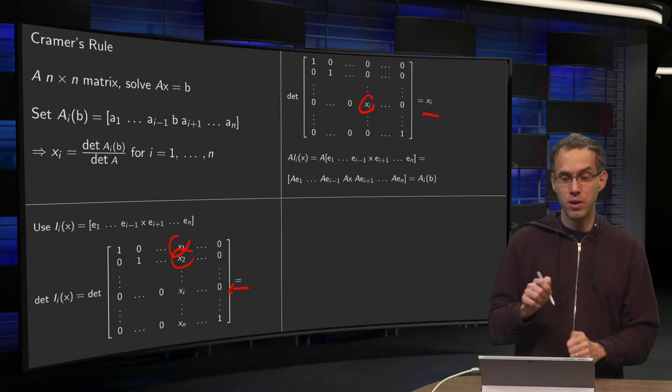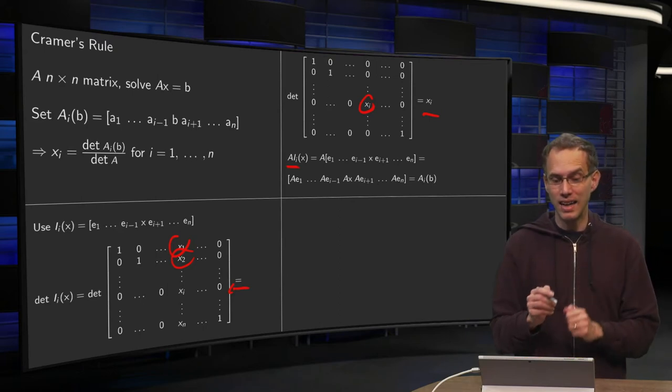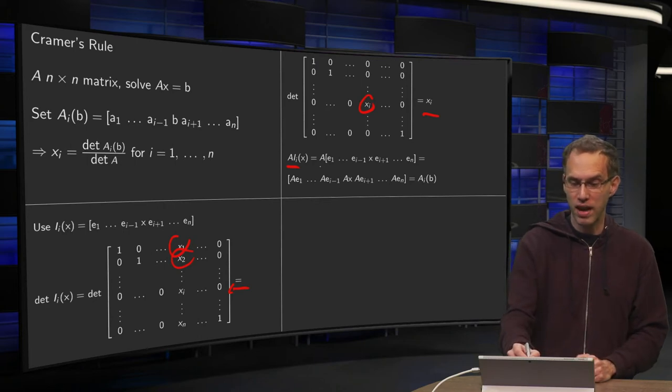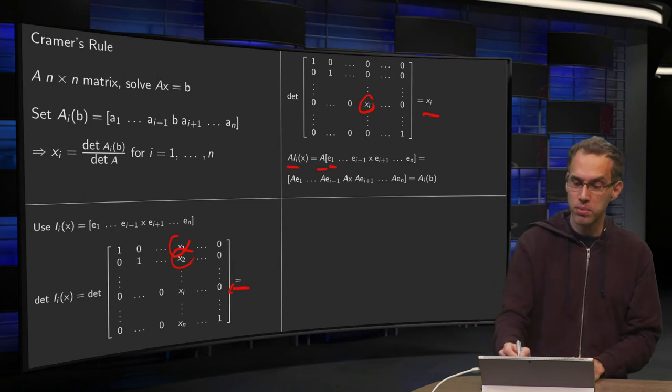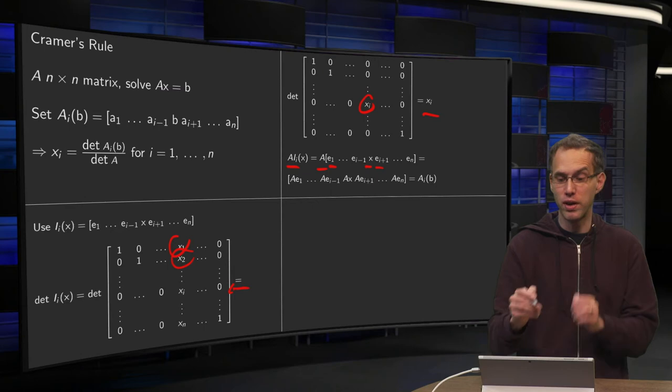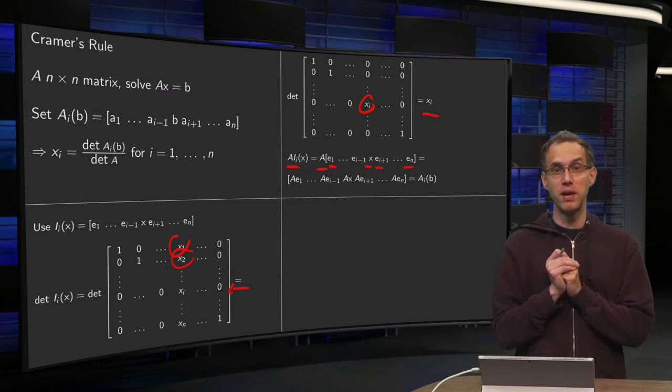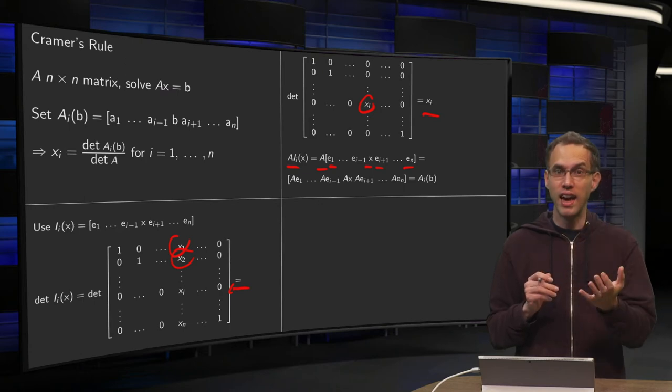How does this help us? Well, if we compute A times I_i(x), so what do we have? We have A and I_i was e_1 up to e_2, e_3 up to x, and then e_i plus 1 up to e_n. Use the definition of matrix times matrix.